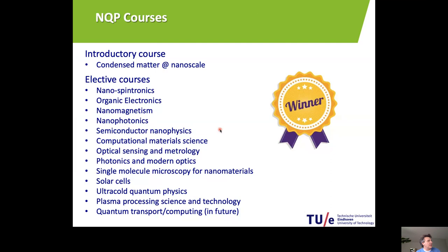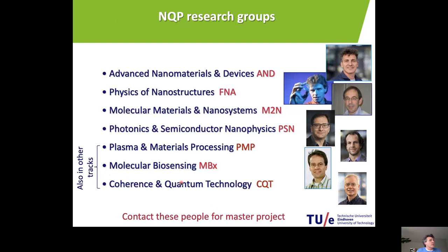In this track, we have the following courses. The first one is mandatory: condensed matter at the nanoscale, which is an introductory course for the whole track. Then there is a list of elective courses — we will distribute the slides so you can have a look yourself. We have spintronics, magnetism, a lot of courses on semiconductors and photonics, and also on quantum physics and quantum technologies. You can select a number of these courses.